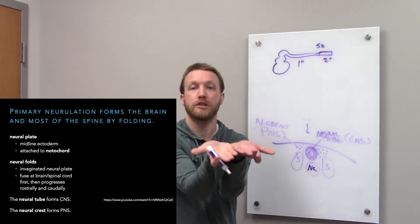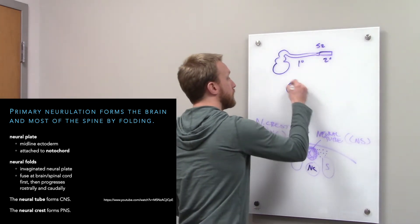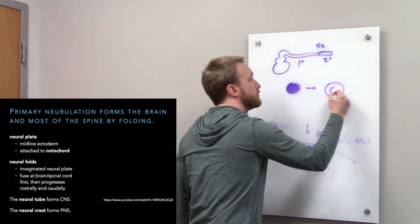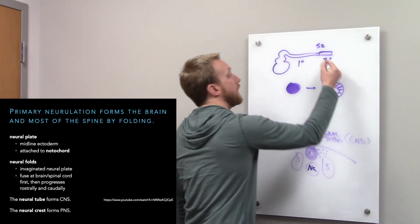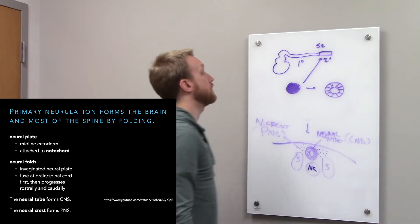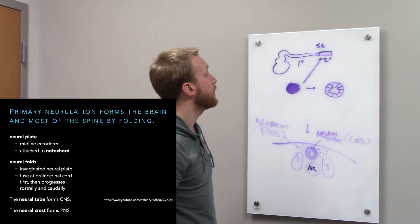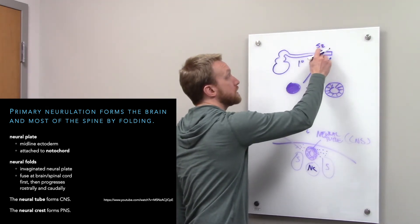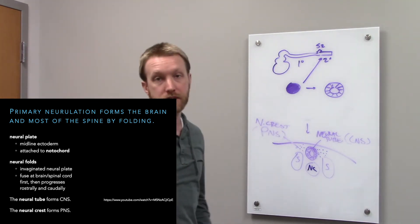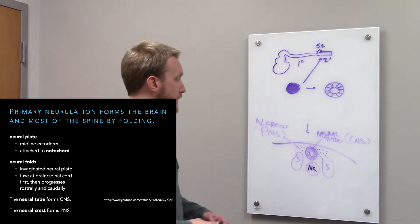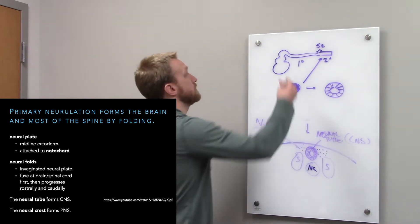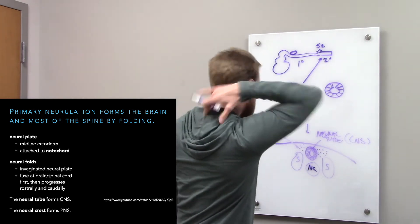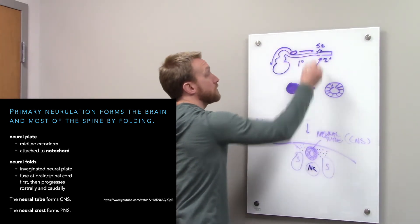Instead of folding a sheet into a tube, we're going to start with a solid rod and turn that into a tube through cavitation. That very end of the medullary cord gets turned into a tube, and then we just fuse these together, and we've got ourselves a nervous system. This process of primary neurulation starts around the neck, shoulder region and then extends in both directions.